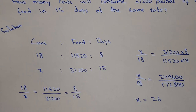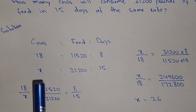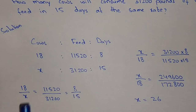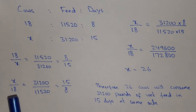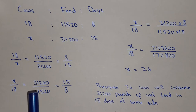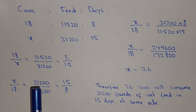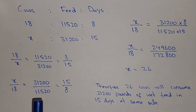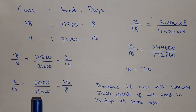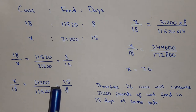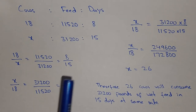Because we have to find out the value of X, we have to inverse all of these. So X divided by 18 equals 31,200 divided by 11,520 equals 15 divided by 8.